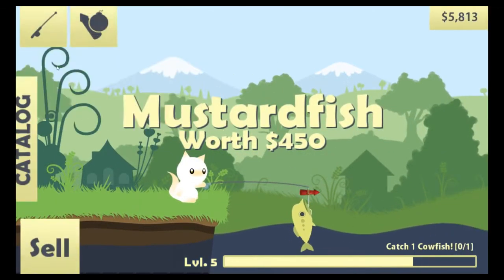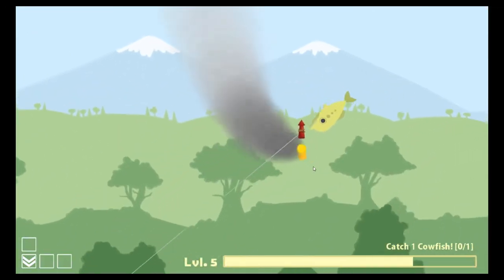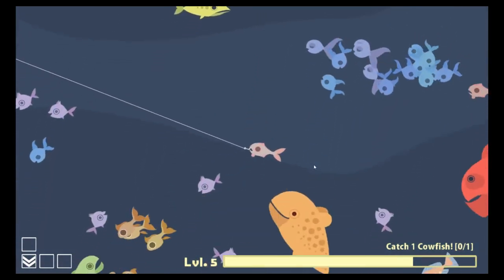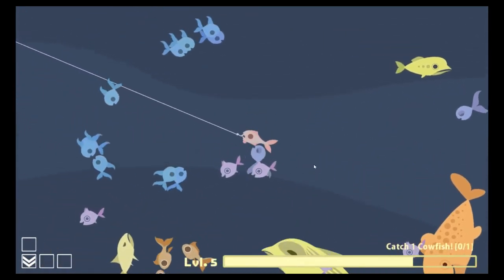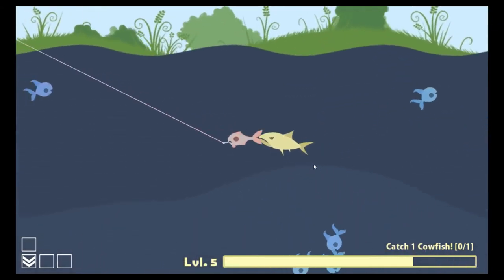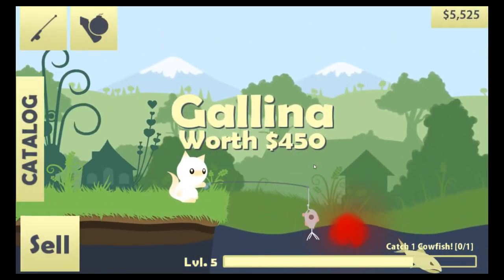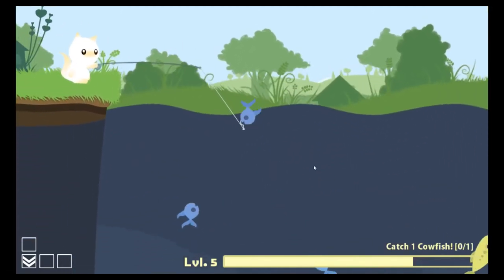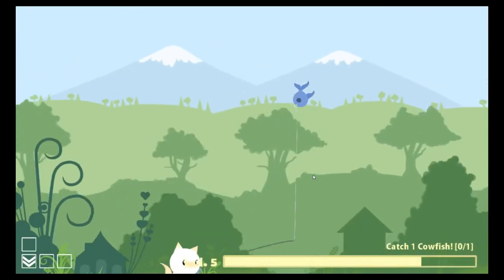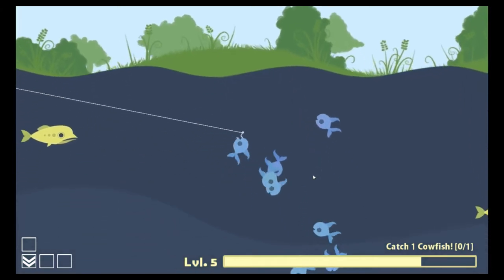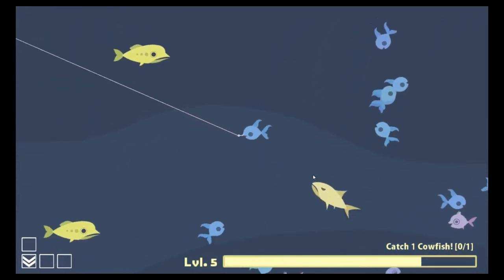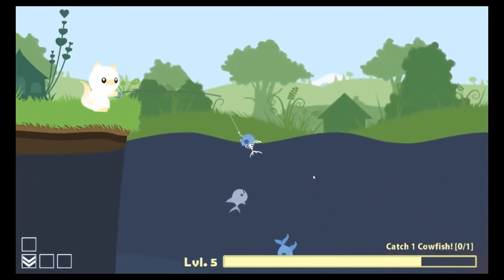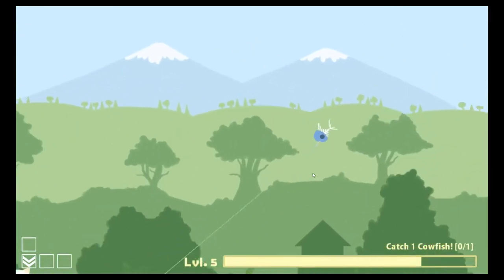I guess we're going to have to catch this mustard fish and I hope we get another one. Put the old rocket on. Blast off. Are you kidding me? I could have had that cowfish too, if it wasn't for this little meddling kid. That guy is just angry at life. I don't know what's wrong with him. Let's get this mustard fish.